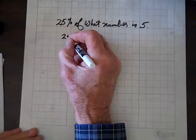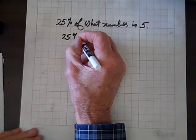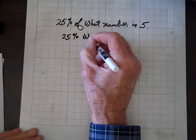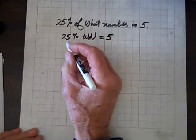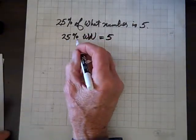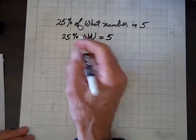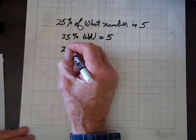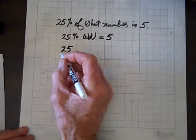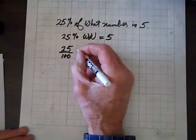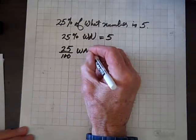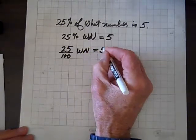So 25% times what number, WN, equals 5? Well, we need to convert, we need to get rid of that percent symbol, so we can write that based on what we did in the previous section. 25 over 100 times what number equals 5?